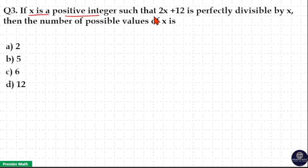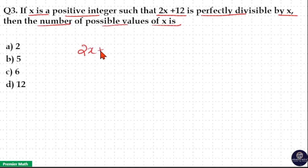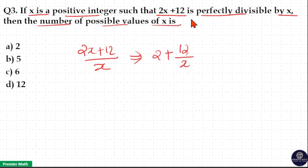If x is a positive integer such that 2x plus 12 is perfectly divisible by x, then 2x divided by x is 2, and the remaining term is 12 divided by x. So 2x plus 12 being perfectly divisible by x means 12 must be divisible by x. To find the values of x, just take the factors of 12.